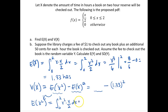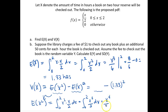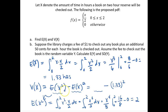That is the integral from 0 to 2 of x²·(x/2) dx, which is the same as the integral from 0 to 2 of x³/2 dx. Integrating gives x⁴/8, evaluated from 0 to 2, which equals 16/8 minus 0. So E[x²] is equal to 2.